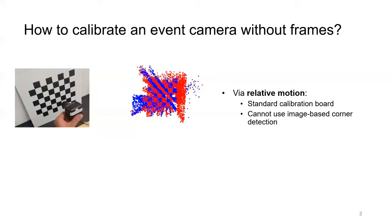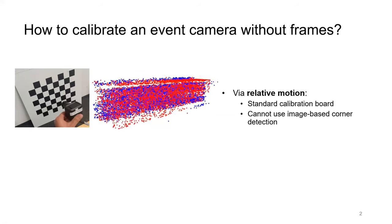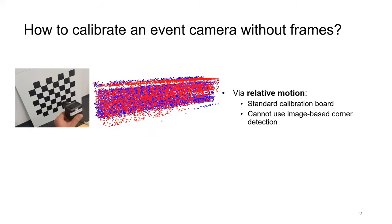Due to the asynchronous property of events, image-based corner detection does not apply to event data, therefore standard calibration frameworks cannot be used.